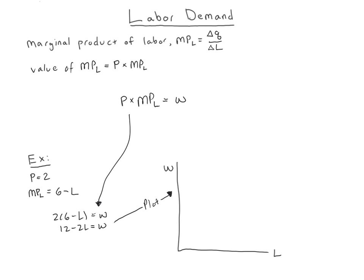Since the wage is basically the price of labor, we use W instead of P, and we like that on the vertical axis. So we want the equation in the form W equals something. We can see it has an intercept at 12, a slope of negative 2, and an L-intercept of 6. So we plot that — it's a straight line — and that's our labor demand.